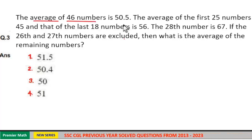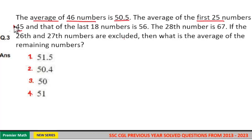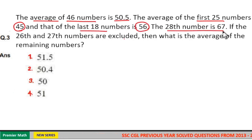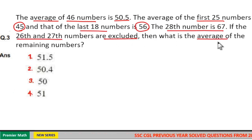The average of 46 numbers is 50.5. The average of the first 25 numbers is 45, and that of the last 18 numbers is 56. The 28th number is 67. If the 26th and 27th numbers are excluded, then what is the average of the remaining numbers?